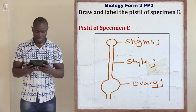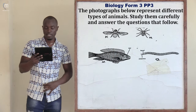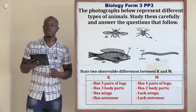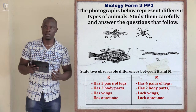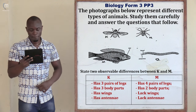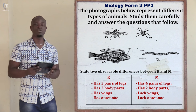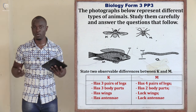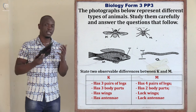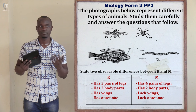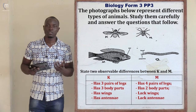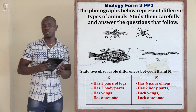Question 3 provides photographs of specimens K, M, N, and O. The first part asks for two observable differences between K and M. Specimen K looks like an insect and specimen M looks like an arachnid — essentially a comparison between class Insecta and class Arachnida. Specimen K has three pairs of legs, while specimen M has at least four pairs of legs.